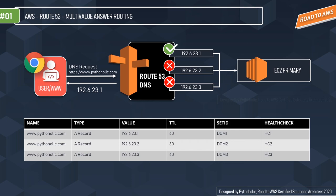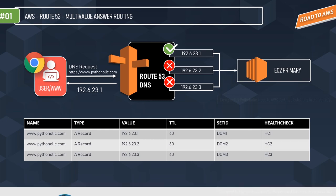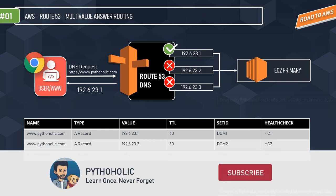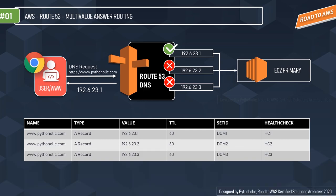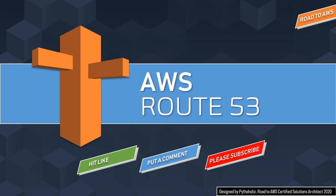When the health check succeeds, the IP is returned as a response to the request. There can be up to eight A records attached in the routing policy for DNS queries. That brings us to the end of Route 53 routing. Make sure to join the next session of AWS — until then, signing off.